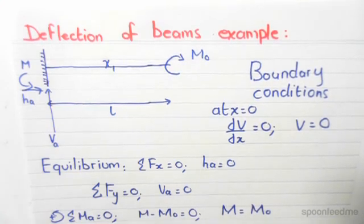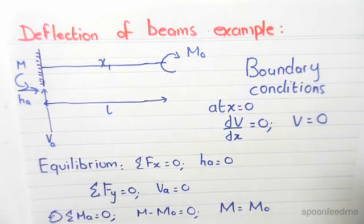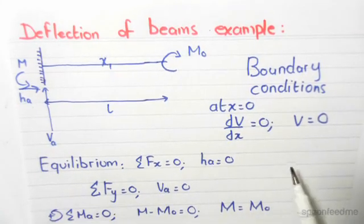we know that at x equals 0, which is at this point the fixed support, the slope of deflection dv/dx equals 0, and the deflection itself v equals 0.